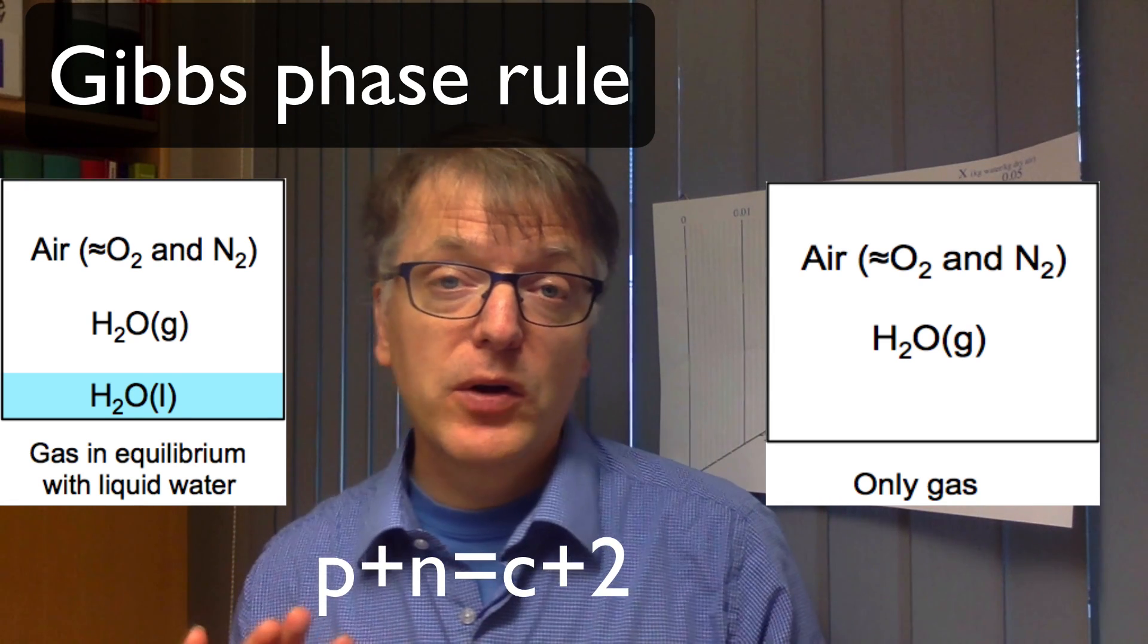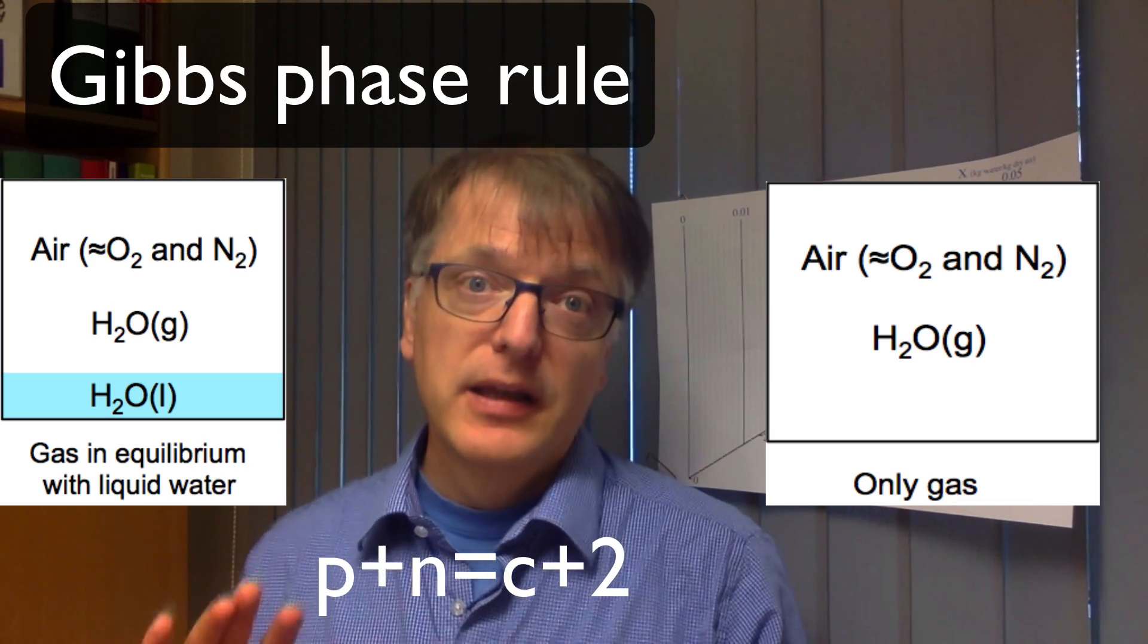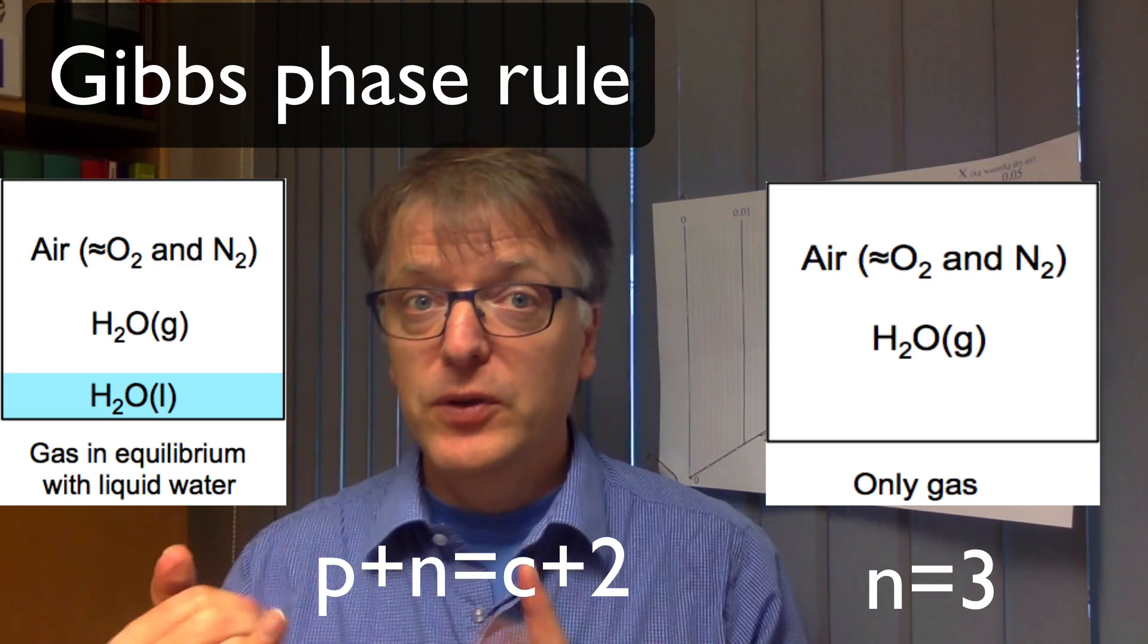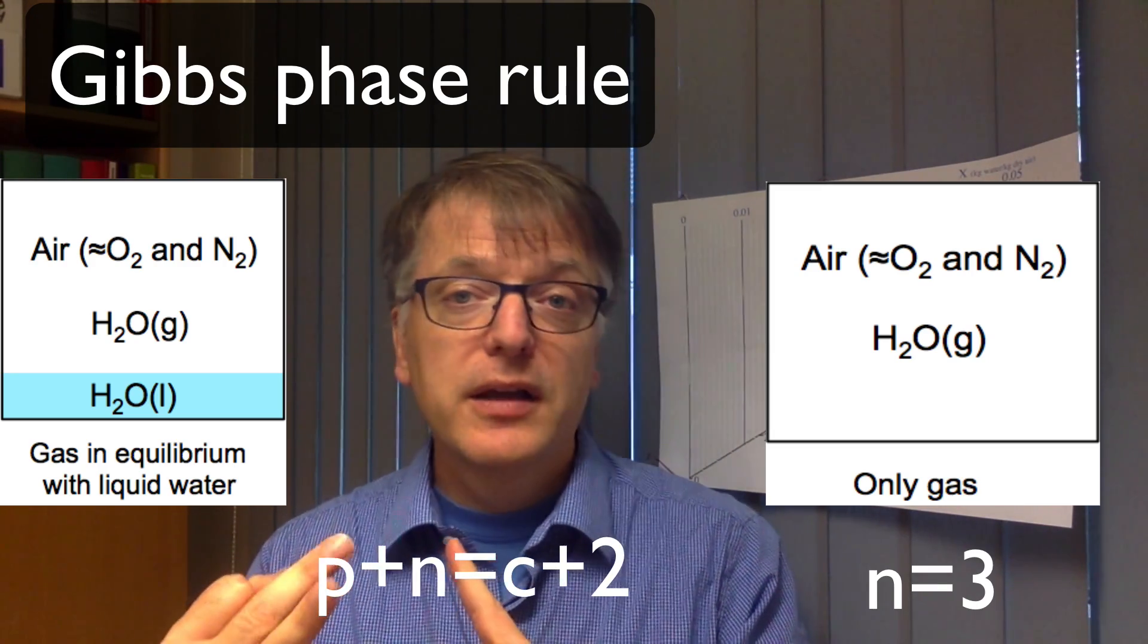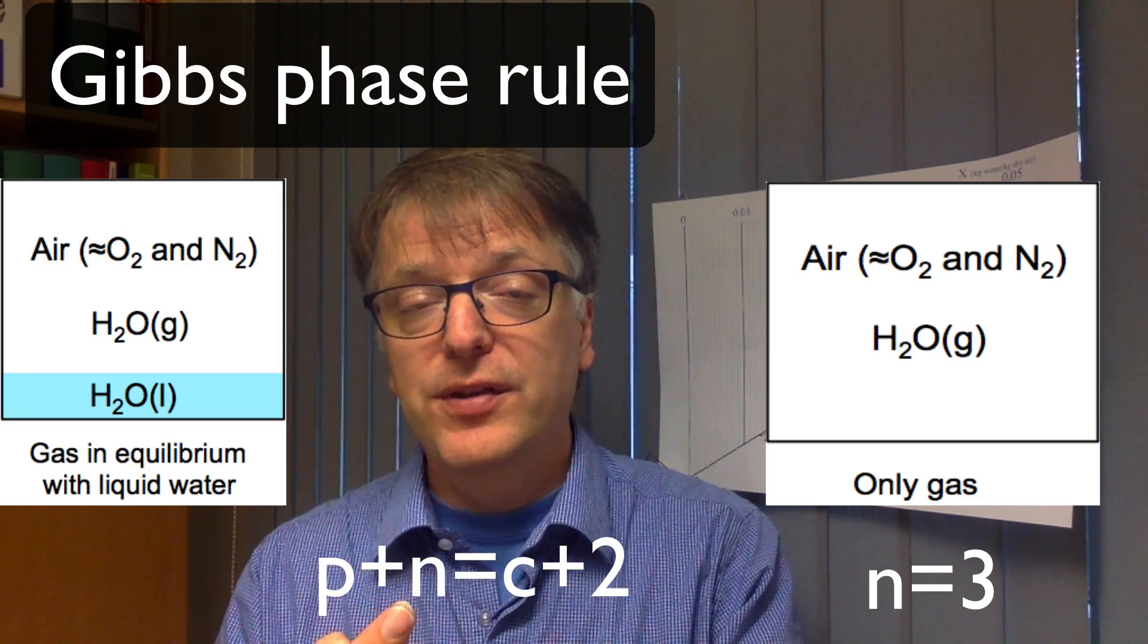So I hope you now calculated that the number of degrees of freedom, if you only have gas, then you have three degrees of freedom, which means that if you know the total pressure, the density of the air and the enthalpy of the air, you can calculate all other state variables from these three.